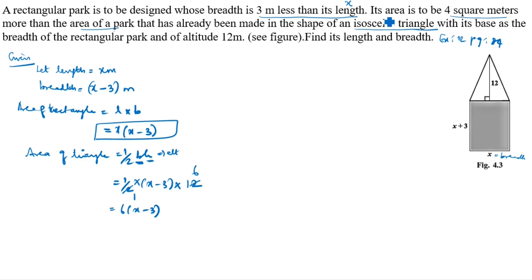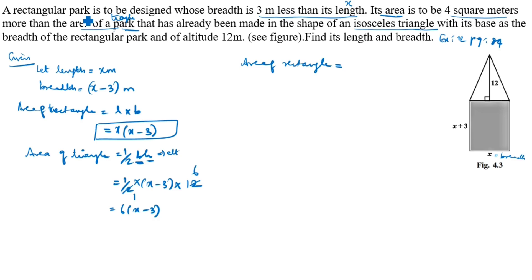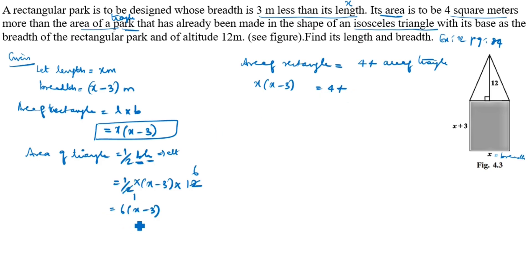In this question, the rectangular area is to be 4 square meters more than the area of the park — that is, the area of the isosceles triangle park. So we write: area of rectangle equals 4 plus area of triangle. Area of rectangle is x(x minus 3), and area of triangle is 6(x minus 3). So: x(x minus 3) = 4 plus 6(x minus 3).